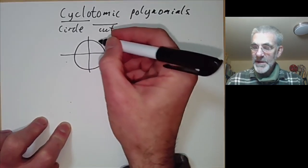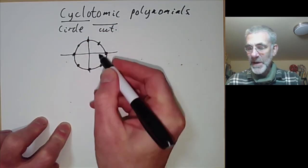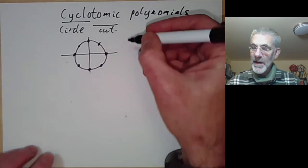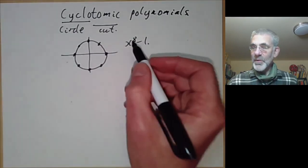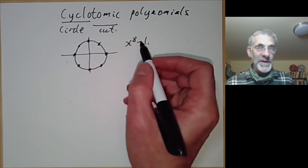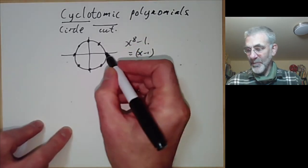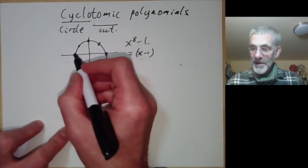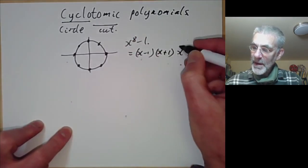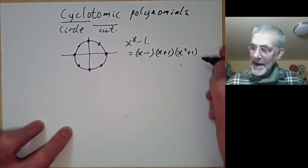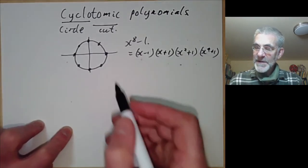The way you cut it up is by choosing some roots of unity. For example, you might choose the eighth roots of unity, and you can see you've cut the circle up into eight parts. The eighth roots of unity are the roots of x^8 minus 1. However, the polynomial x^8 minus 1 is obviously reducible because we can write it as: it's got the 1st root of 1, it's got the other square root of 1, it's got the two fourth roots of 1, and it's got the eighth roots of 1. So it factors as these four polynomials.